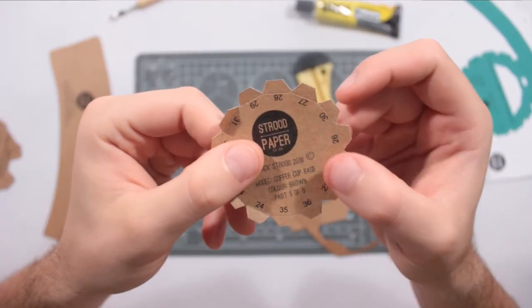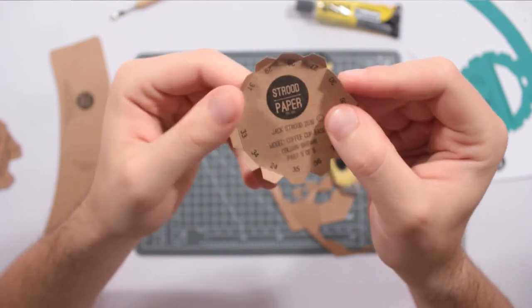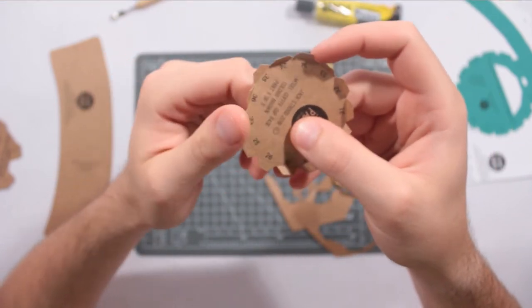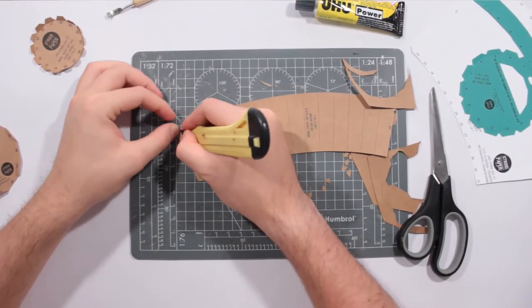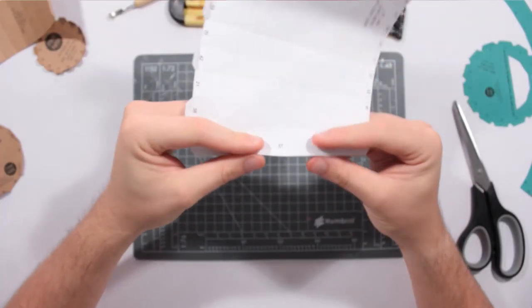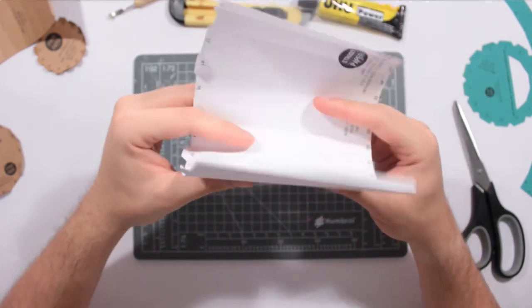So with these tabs, these have to go inside like that because we don't want any of the ink and any of the kit design showing on the final model. We can just gently fold these. It doesn't have to be too crisp because it is just round anyway.